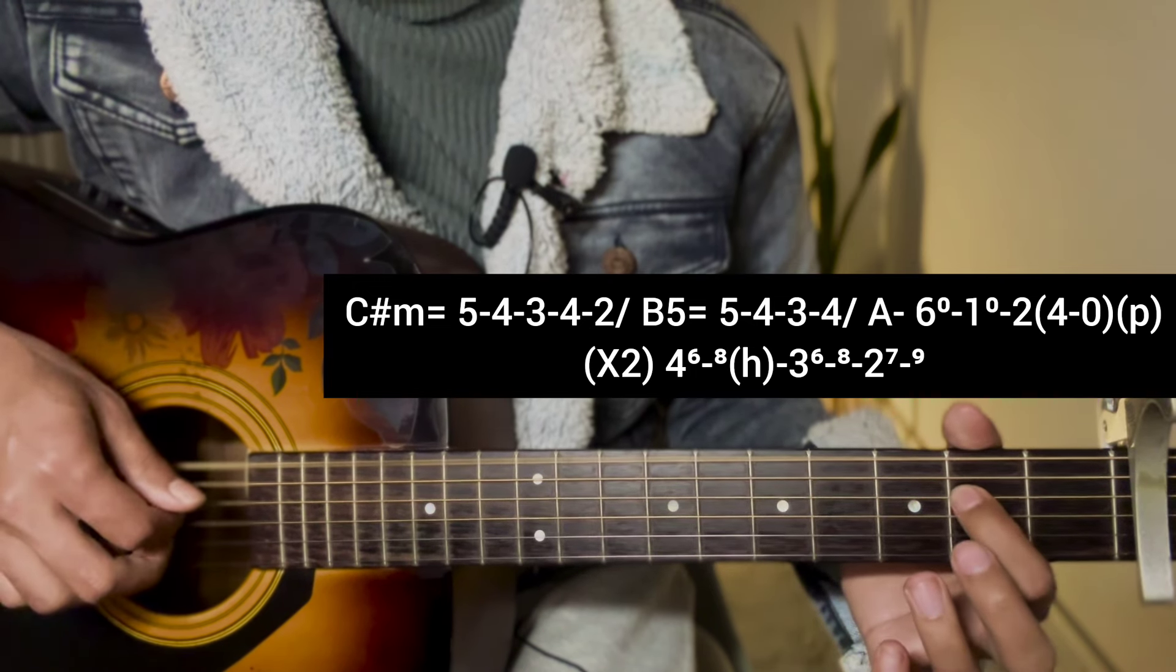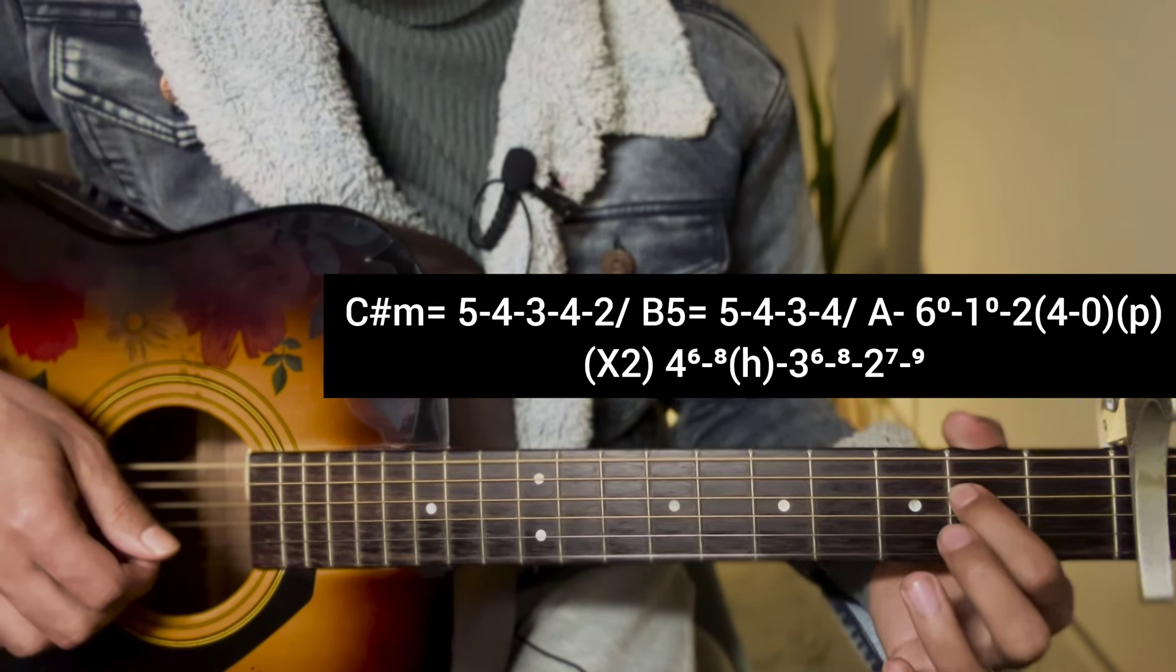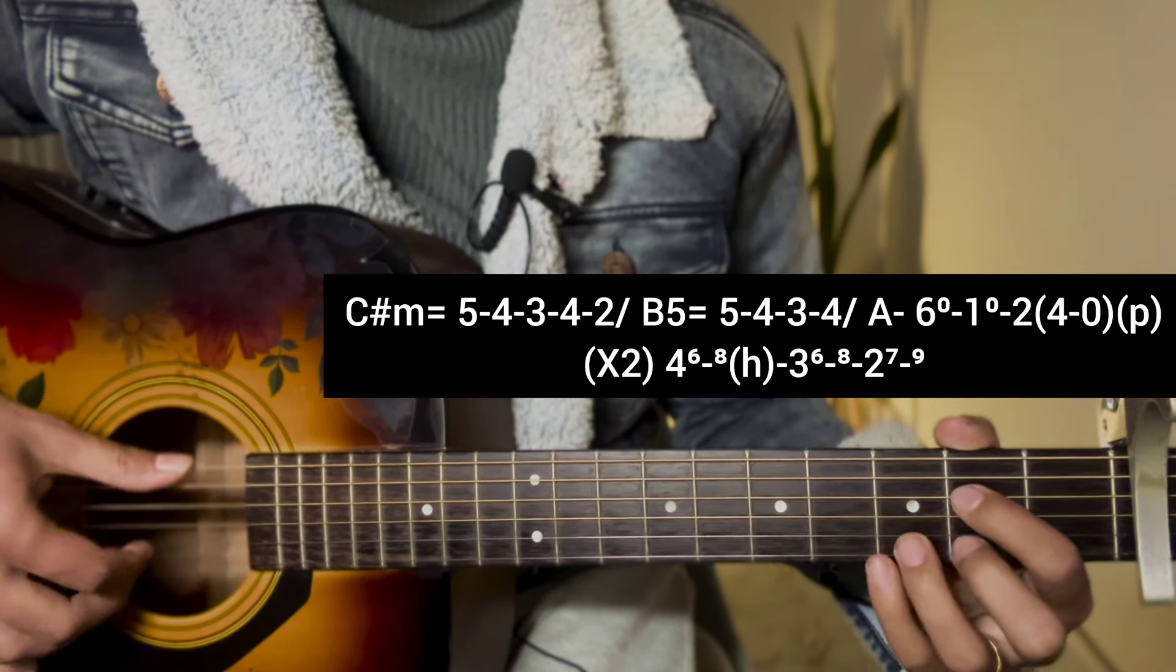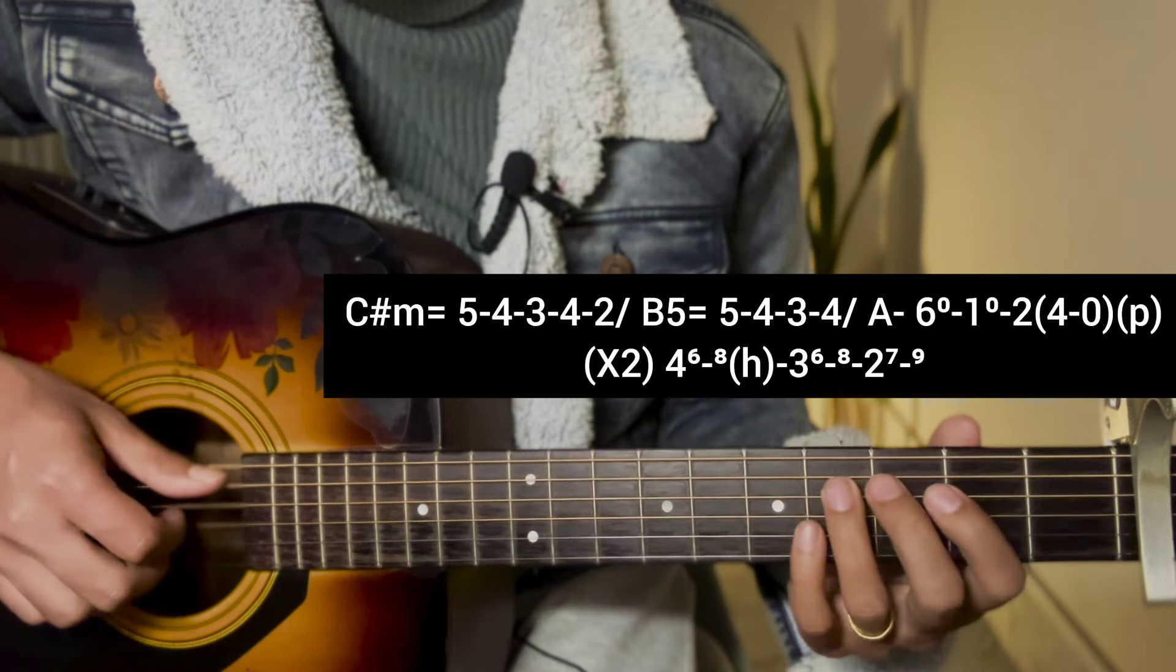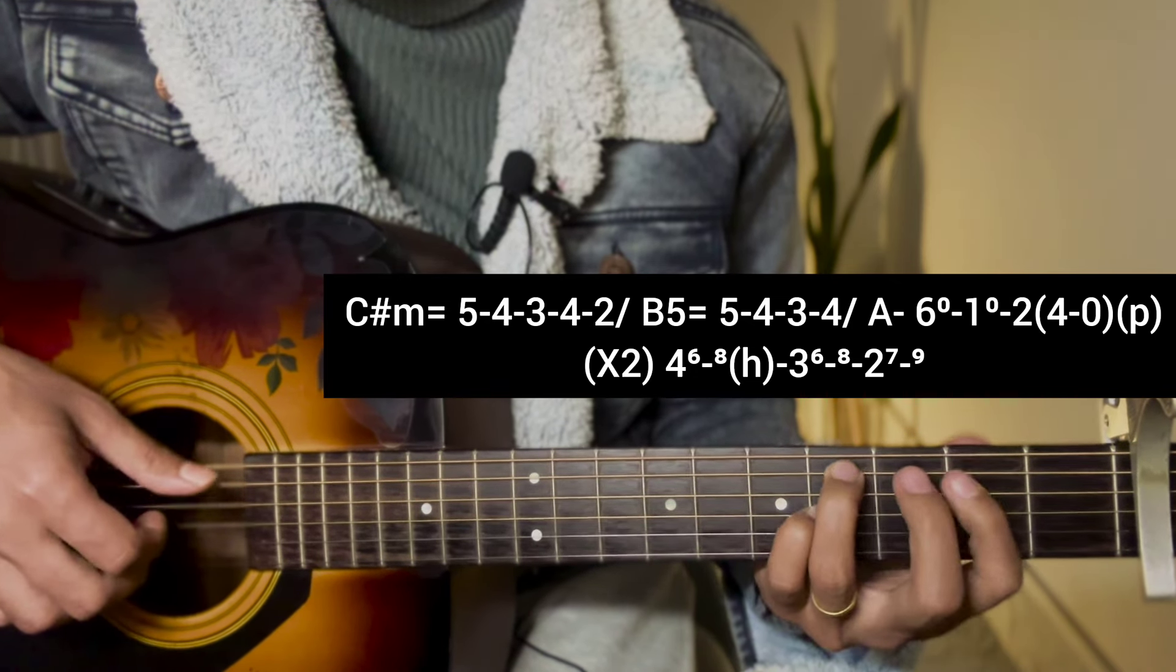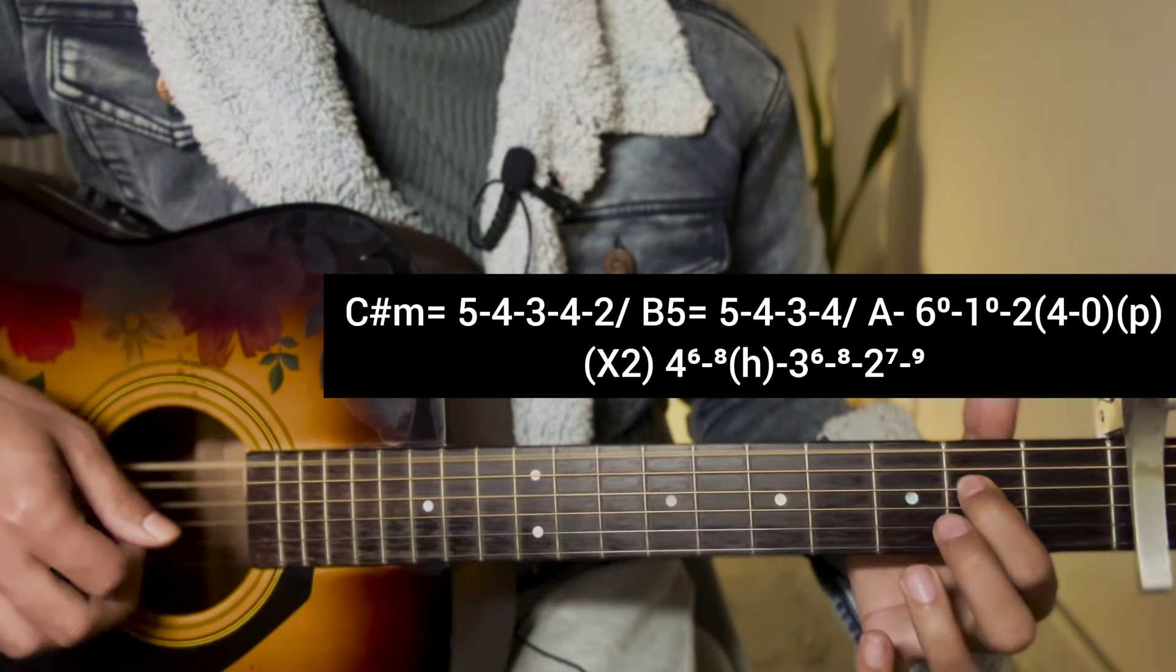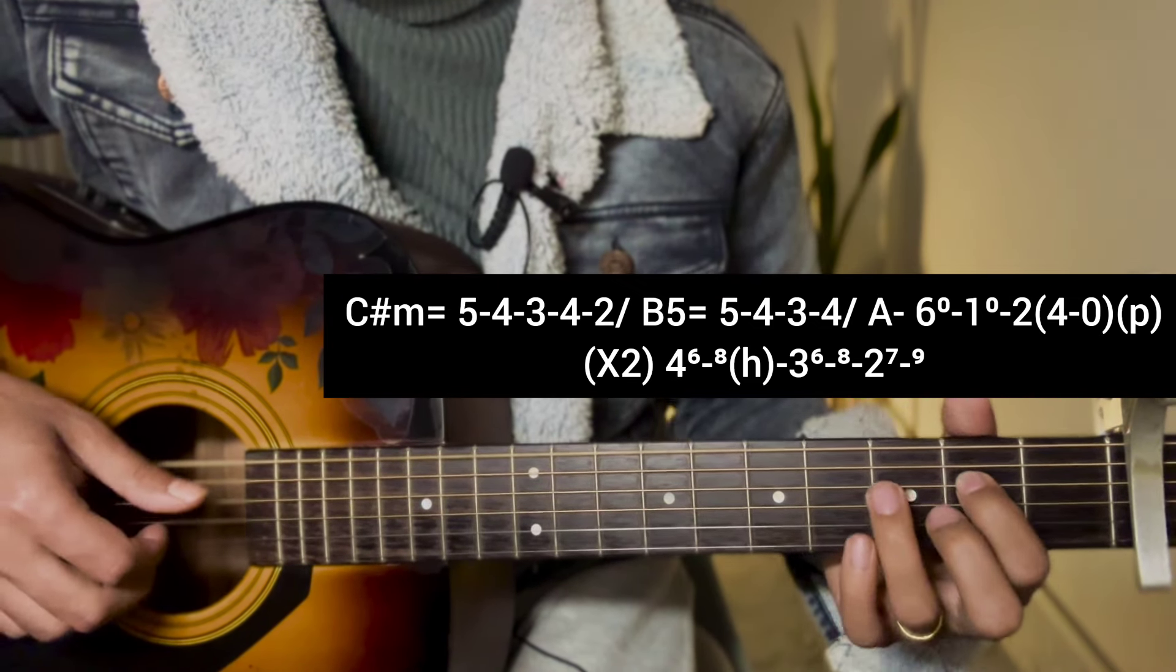Then open E major scale: 6-4-4-4-3-4-3-4-4-4-4-4-3 open open. So this is the first time. Do the same thing with C sharp.